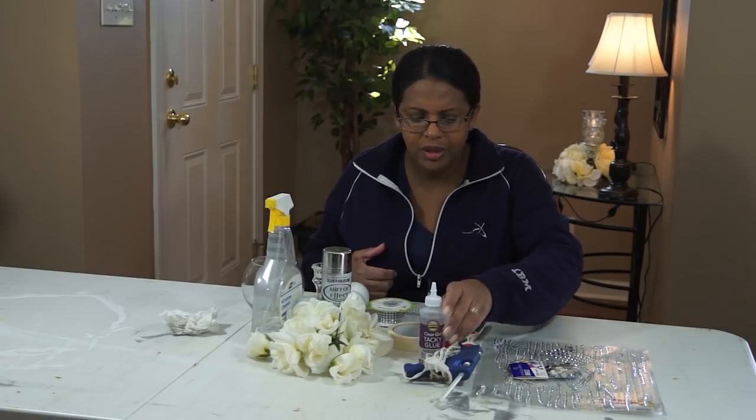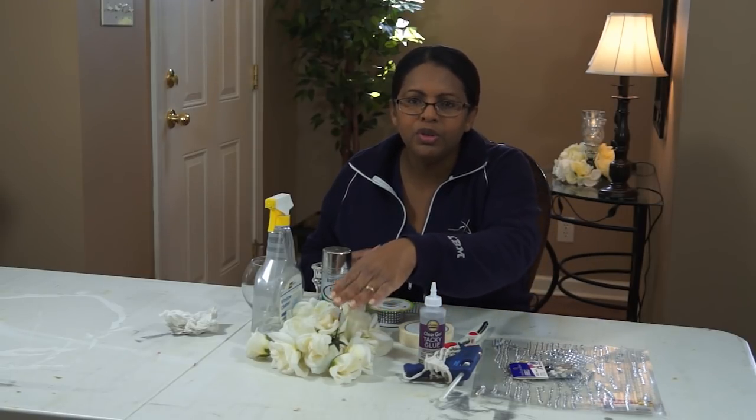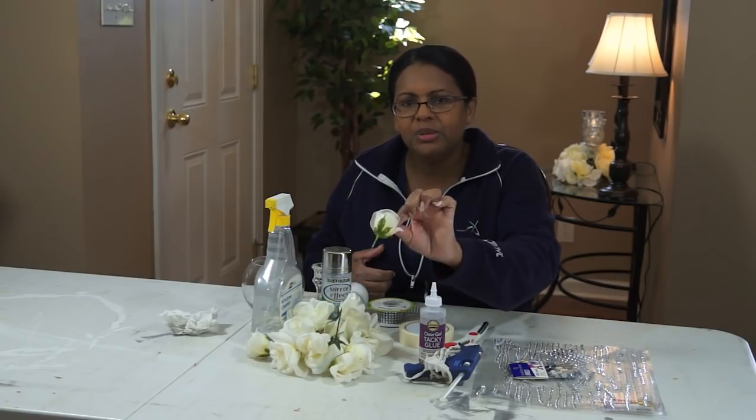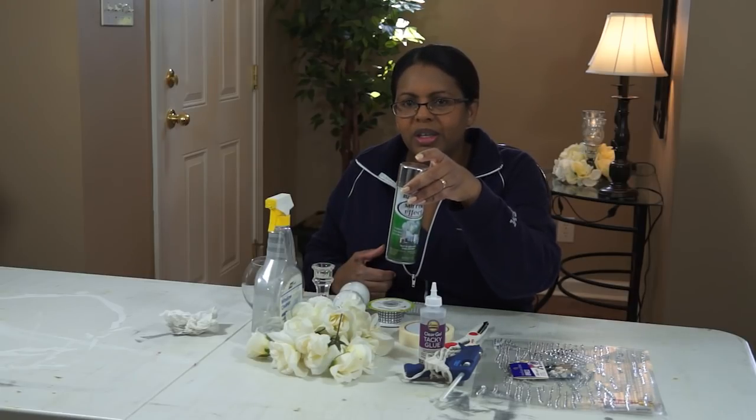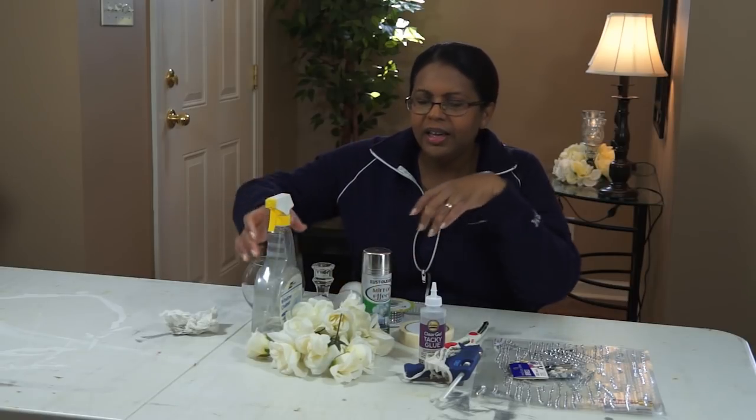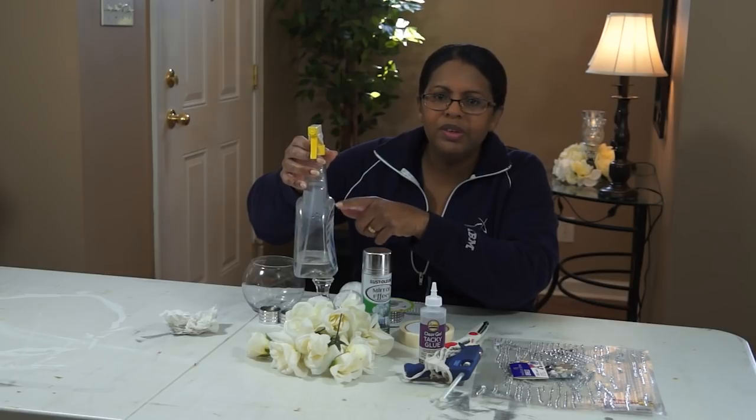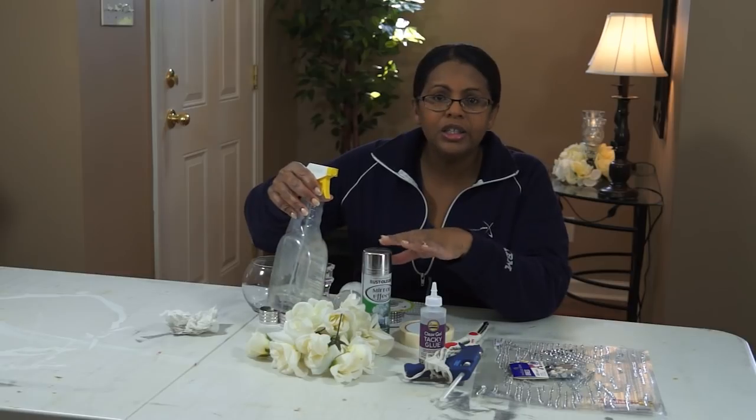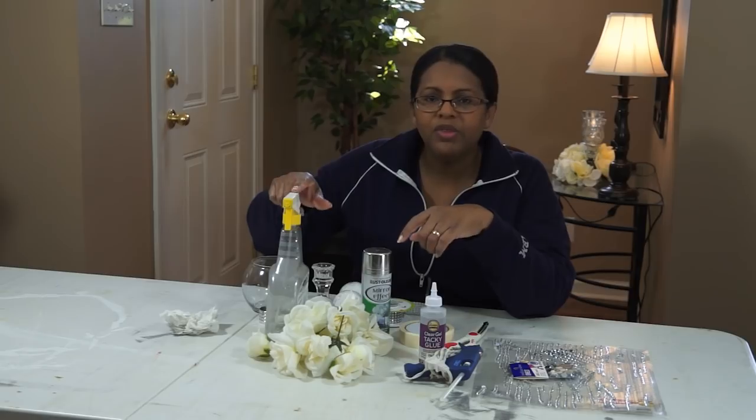You'll need some hot glue or tacky glue, scissors, tape. You're going to need florals of your choice, it doesn't have to be white flowers like I have here, and you need to cut the stems down to about that length. You're going to need some of this mirror effect spray paint. In this bottle I have just vinegar. Typically you can mix this with about 50-50 vinegar, 50 water, and then that way you can use this to give the antique look to your mirror finish to give it the mercury glass look.